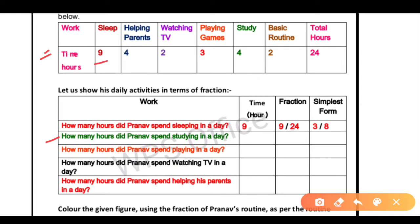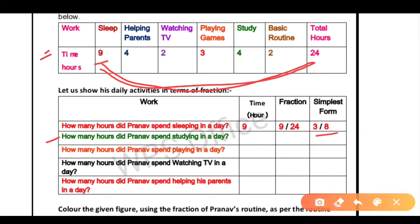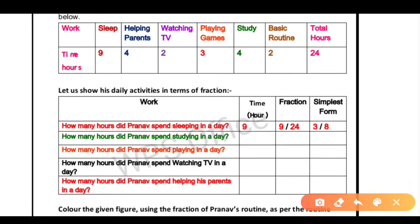He sleeps 9 hours, so the fraction will be 9 divided by 24. We write the hours in the box divided by the total. When we simplify 9/24, we divide both by 3, and it becomes 3 by 8. So 3 is 9 simplified and 8 is 24 simplified.